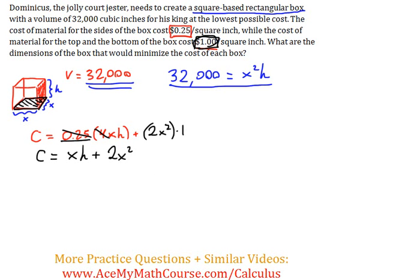Since this is an optimization problem, we need to take the derivative and set it equal to zero. But we need one variable, and we have two: x and h. So we'll use the volume equation to isolate h. Dividing by x², we get h = 32,000/x².